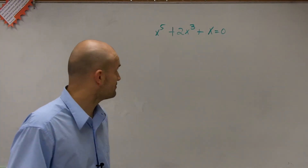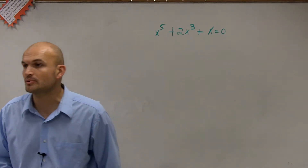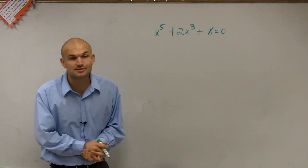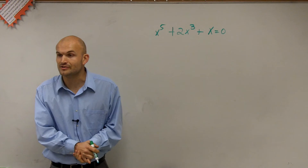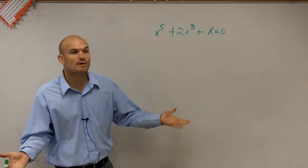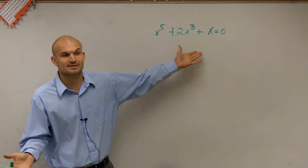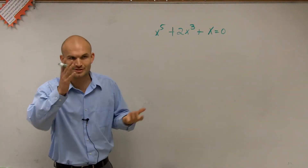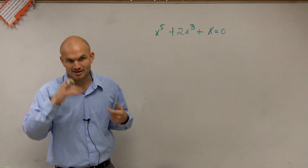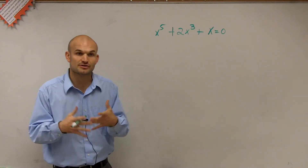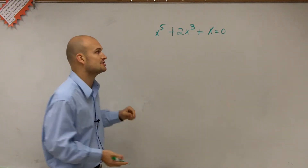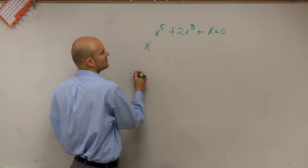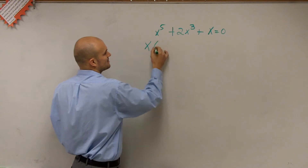So what we have is x to the fifth plus 2x cubed plus x. What I did is I asked you guys to solve this by factoring. So what we want to do for a problem like this is obviously look for the GCF. As Brooke mentioned, you should always look for factoring and always factor out the GCF first. So I say in this form I could factor out an x.